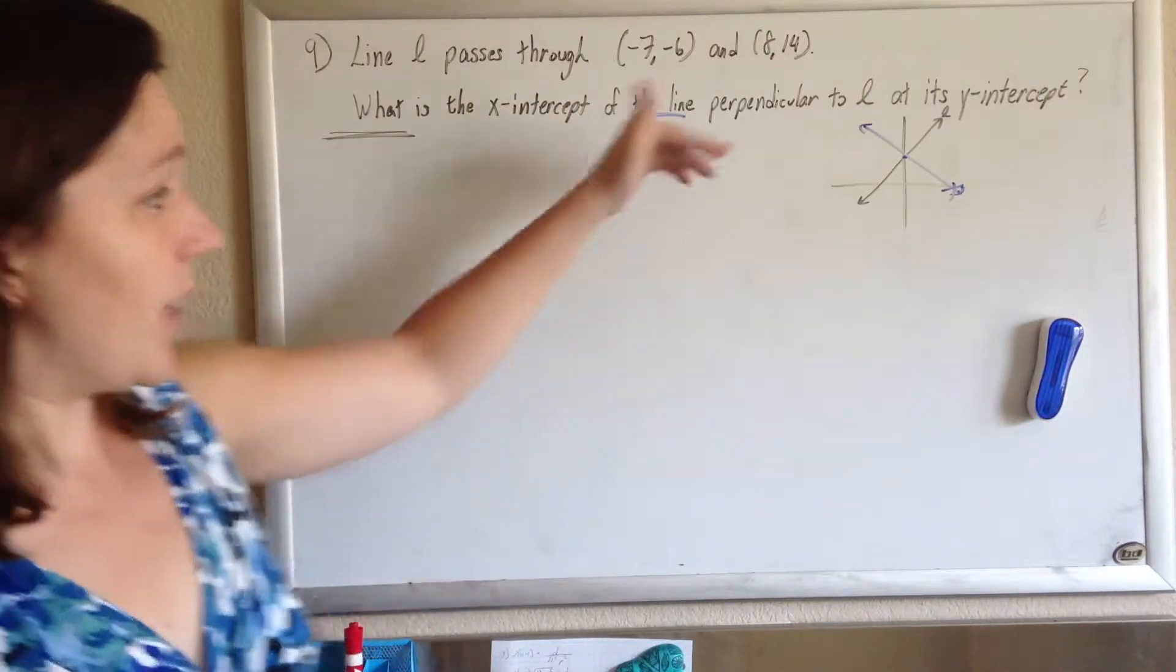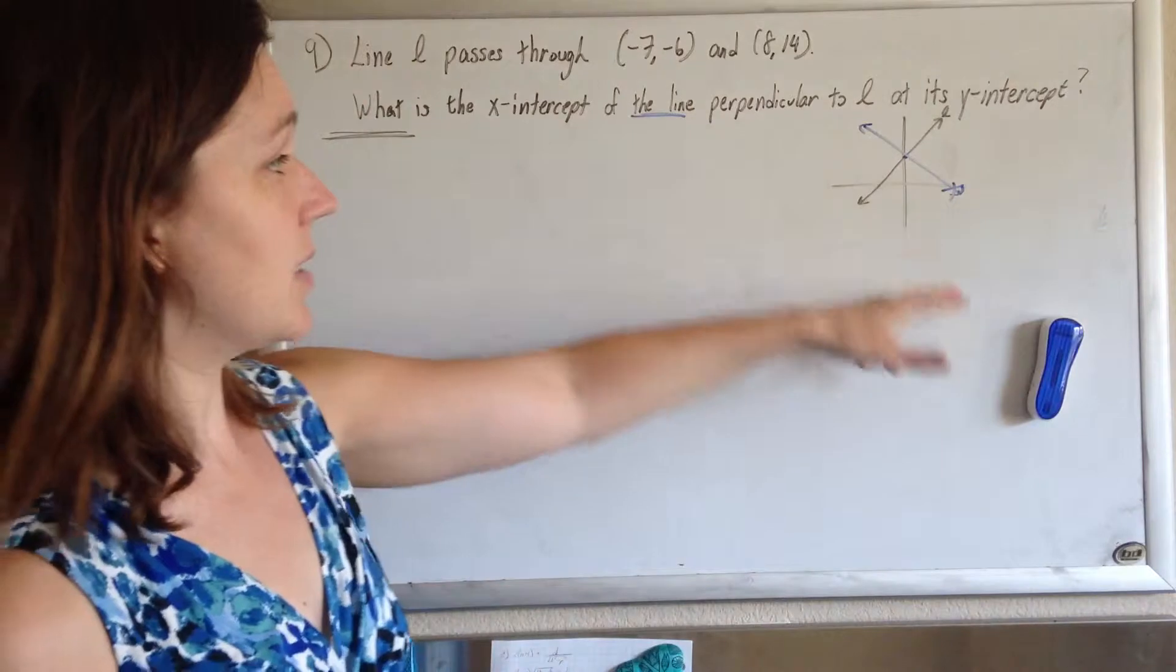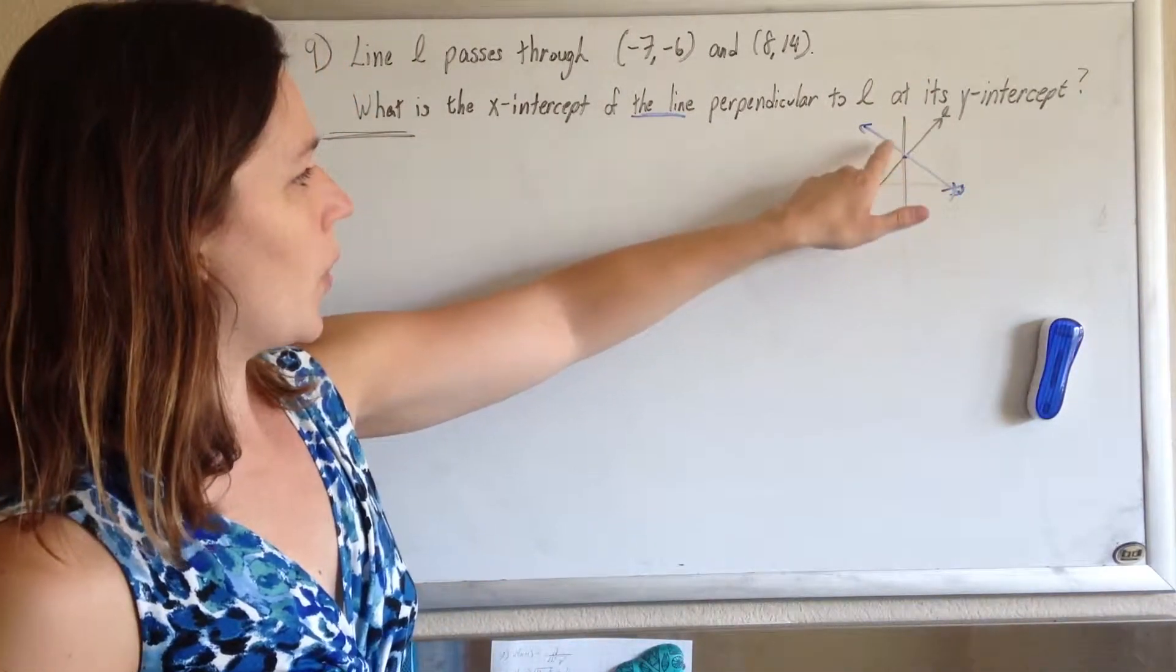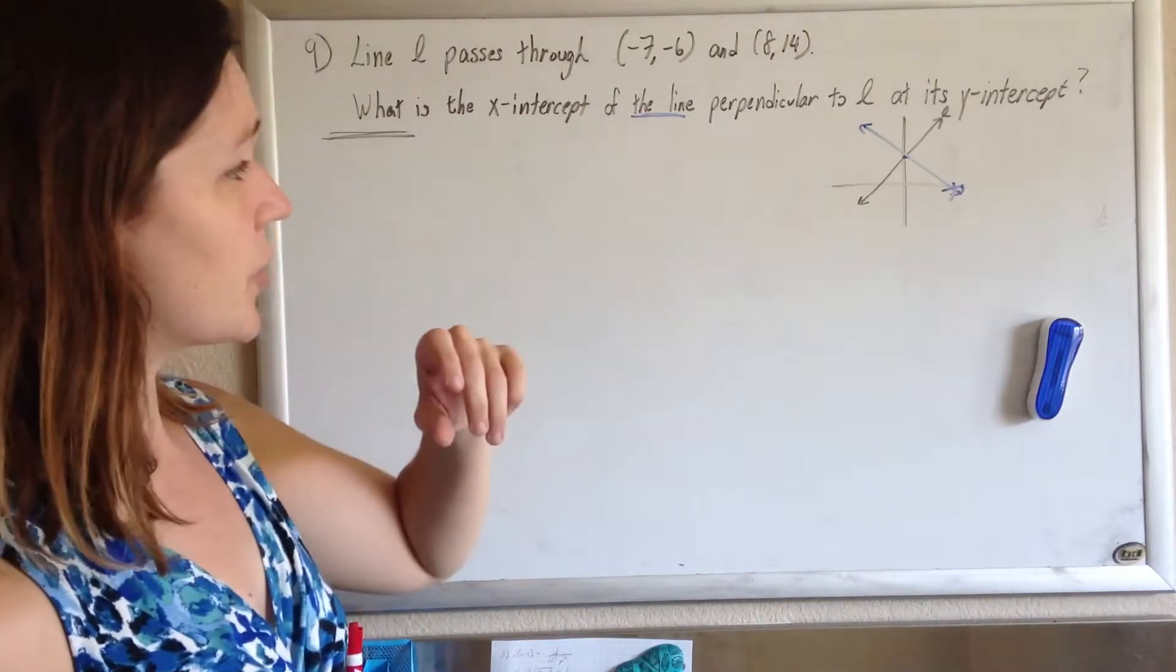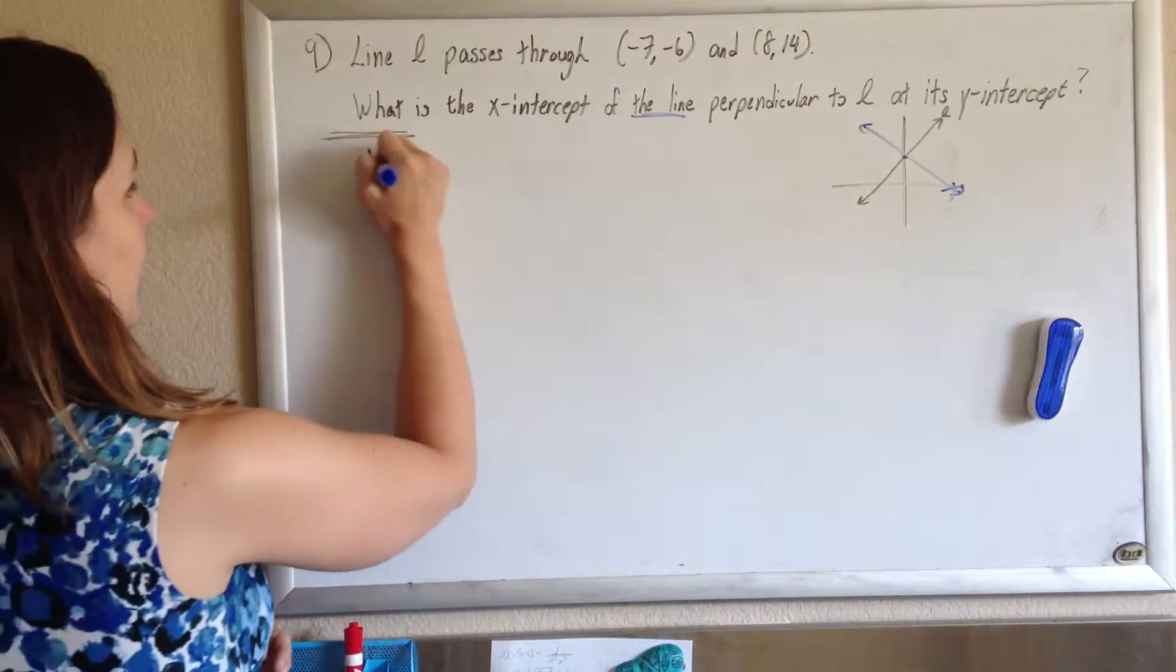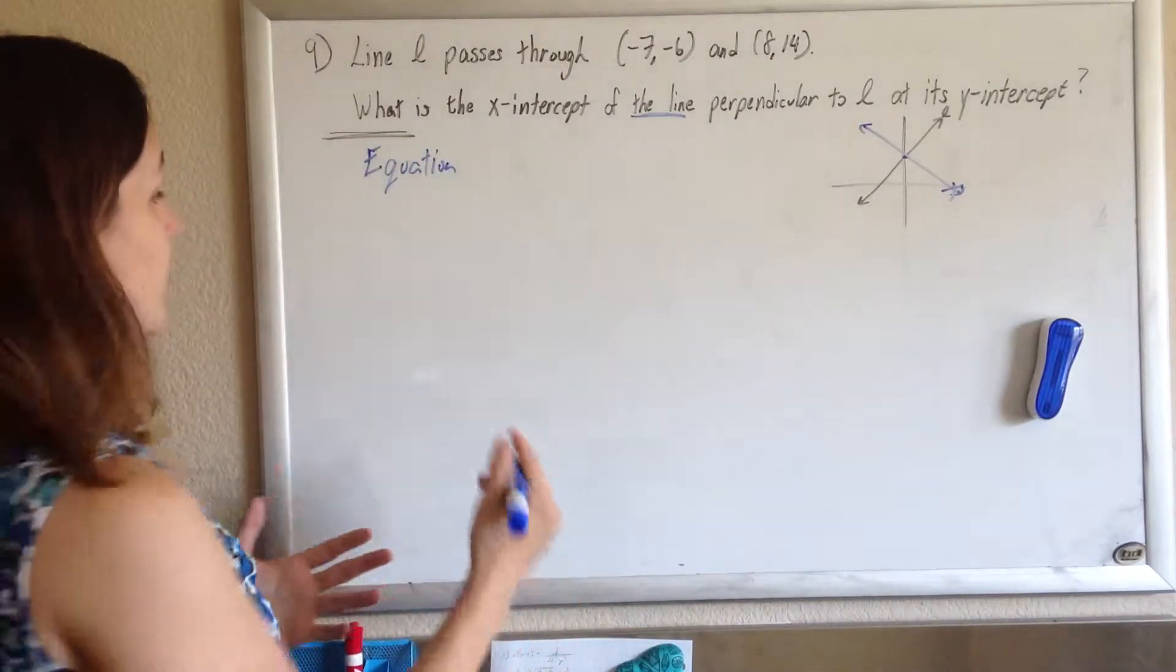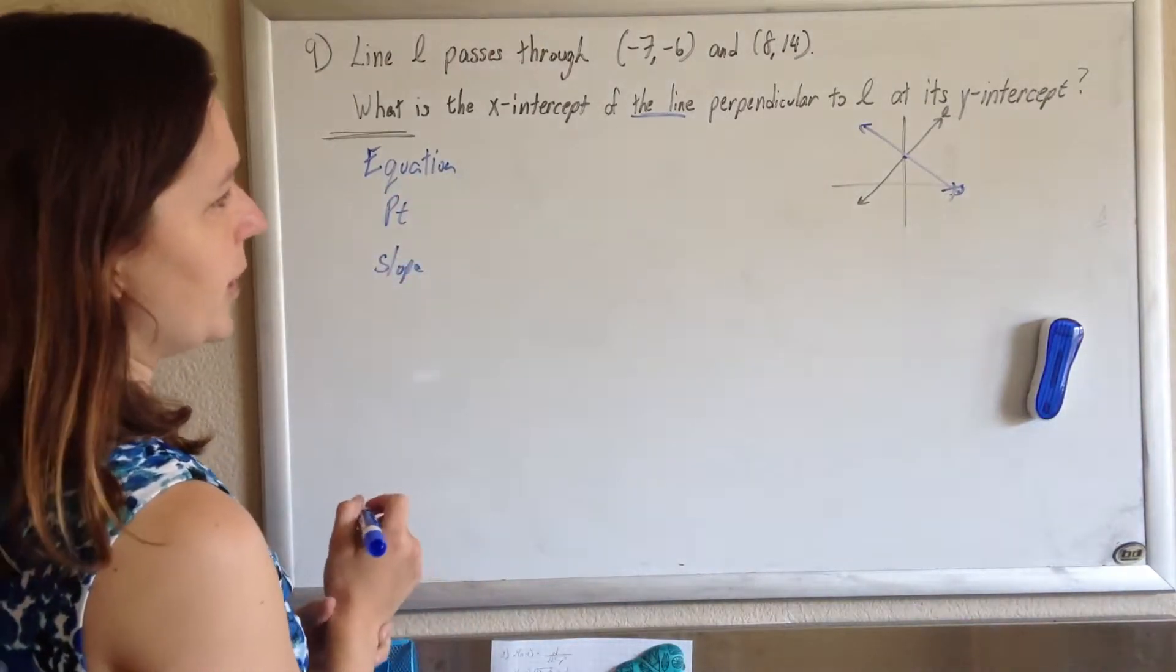So what I'd like to do is find an equation of this new line. Once I have the equation of the new line, I can find anything I want. To find an equation of a line, I just need a point on the line and the slope of the line. You need a point on your line and you need a slope of your line.